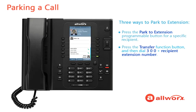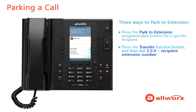Another option is to press the Verge phone transfer function button and then dial 300, which is the Park to Extension prefix, followed by the recipient extension number. If your AllWorks system uses extension mode, you need to dial star, 300, plus the recipient extension number.